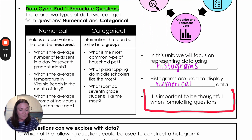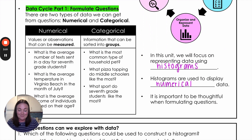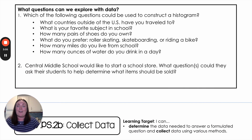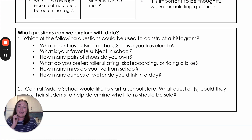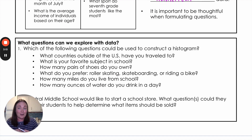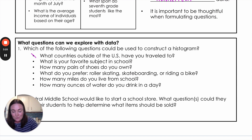When going through this data cycle process, it is very important that we are thoughtful about formulating questions and that we ask questions that are going to give us the answers we want. Let's look at some examples — which of the following questions could be used to construct a histogram? Remember, histograms use numerical data. So: what countries outside the U.S. have you traveled to? That gives us categories, not numbers. What's your favorite subject in school? Again, not something that gives us a number.